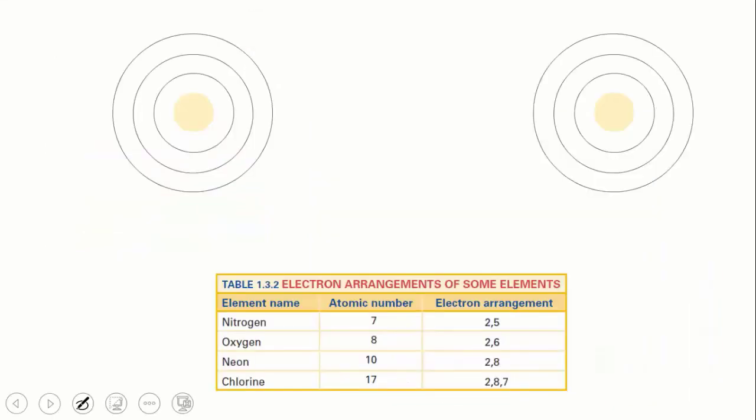We can work backwards with this and draw diagrams for atoms from their electron configurations. For instance, nitrogen has 7 electrons, and its electron configuration is 2, 5. So we can draw 2 electrons in the lowest energy level, and 5 in level 2.